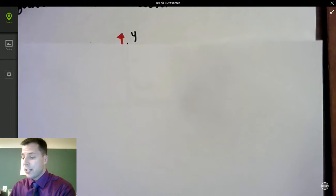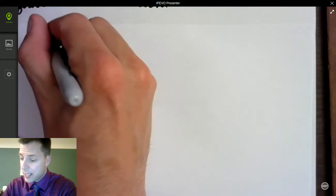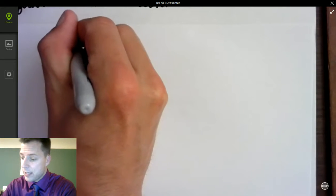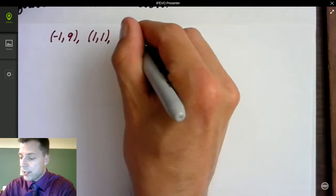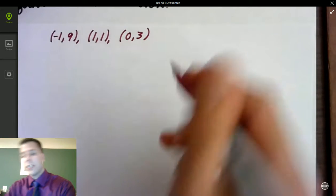So I've got three points. I've got negative 1, 9. I've got 1, 1. And I've got 0, 3. So that's going to be key.